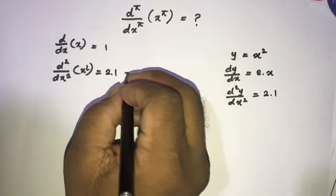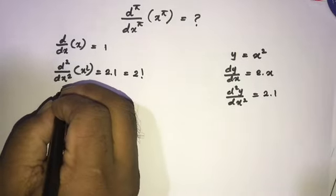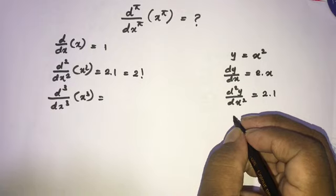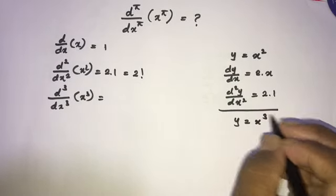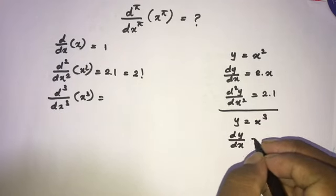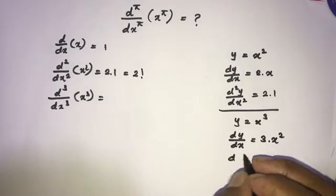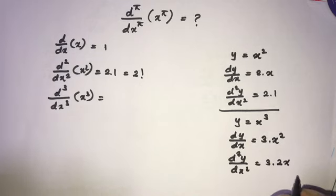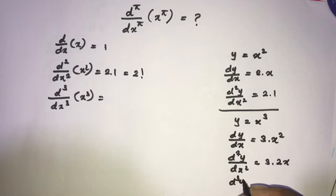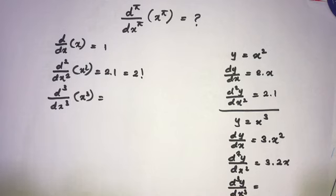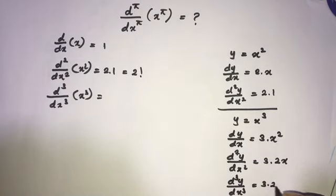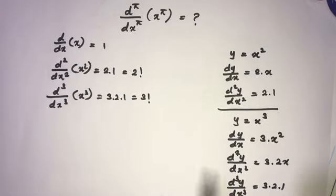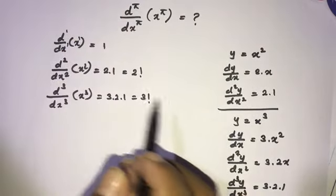We can write 2 times 1, which is equal to 2 factorial. Now for the third derivative of x to the third power: y equals x cubed, dy/dx equals 3 times x squared, d²y/dx² equals 3 times 2 times x, and the third derivative of y equals 3 times 2 times 1, which is equal to 3 factorial.